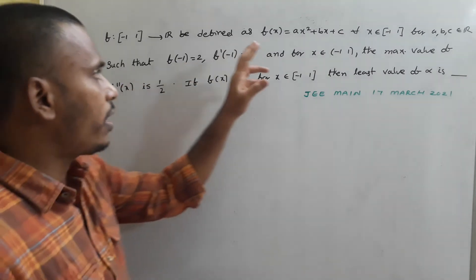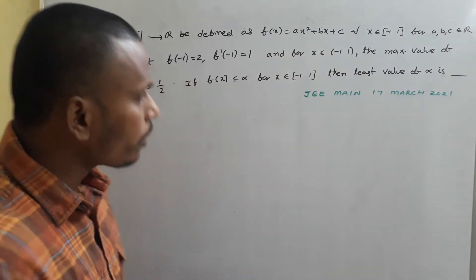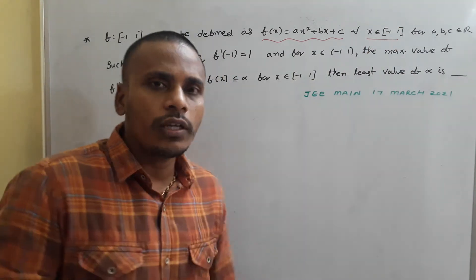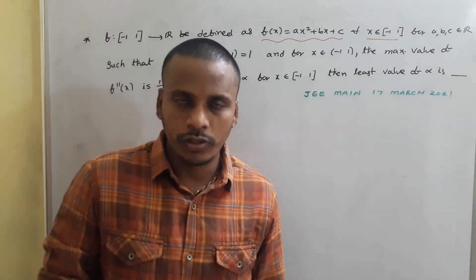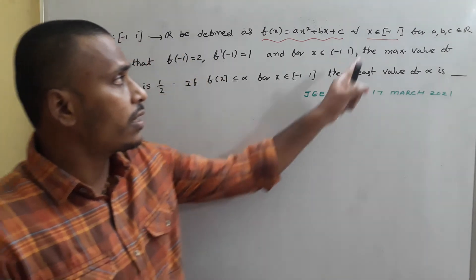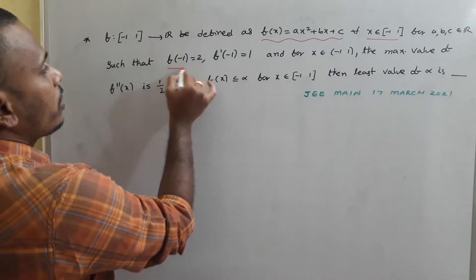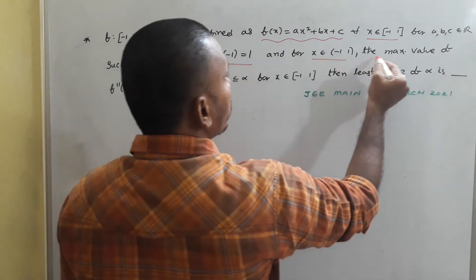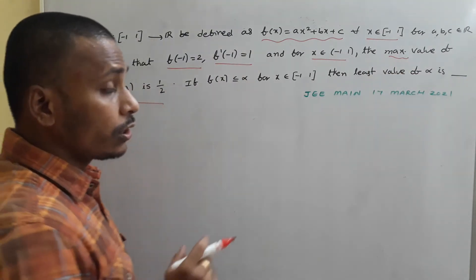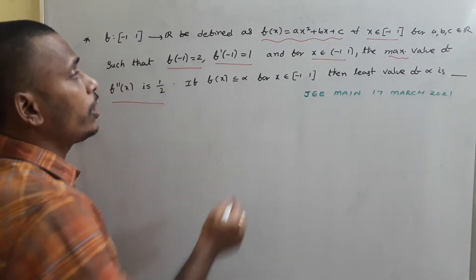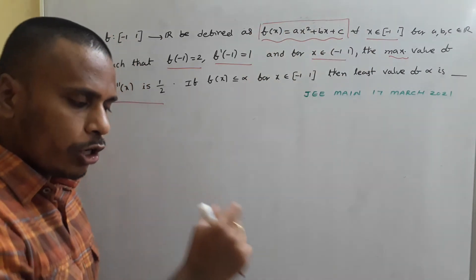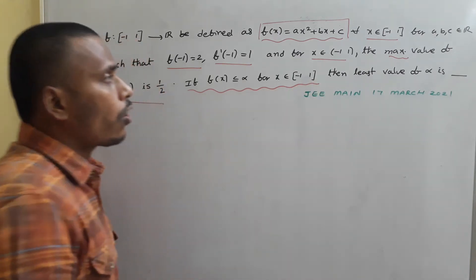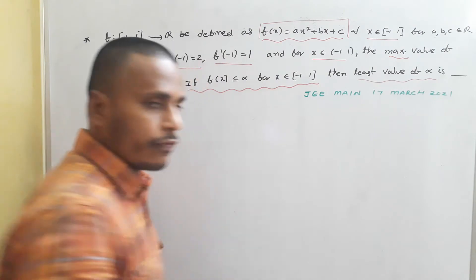The next problem: f(x) = ax² + bx + c is a quadratic, but restricted to x ∈ [-1, 1]. Given conditions are: f(-1) = 2, f'(-1) = 1, and the maximum value of f(x) for all x ∈ [-1, 1] is 1/2. Using these three restrictions, we finalize the quadratic polynomial f(x), then find the least value of α such that f(x) ≤ α for all x ∈ [-1, 1].